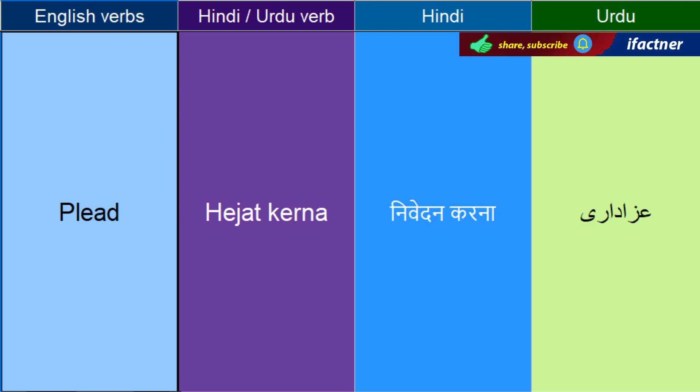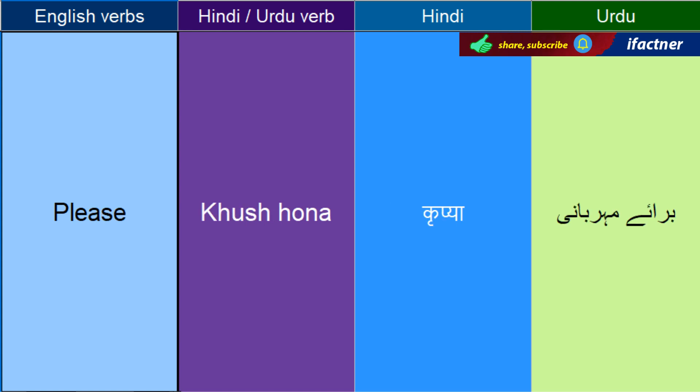Higjat kerne ko kehengay — Plead. Khush aane ko bhi kehthayain — Please. I am pleased to see you — aap ko dehk kar mein khush hoon. Aur isi se nikla hai Pleasure. Pleasure is all mine — sab khushi meray liay hai. Aap ko kehayain na nice to meet you, toh agi se aap kehthayain: Pleasure is all mine.